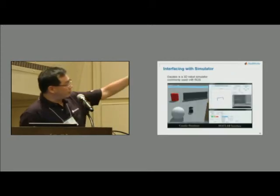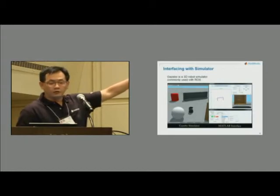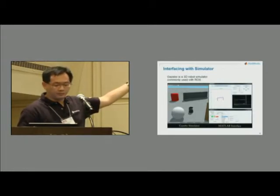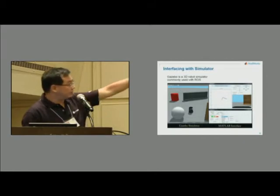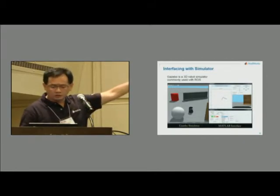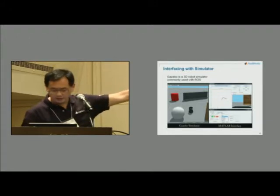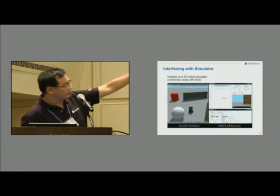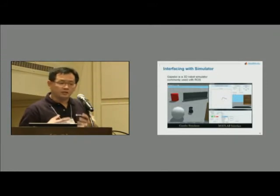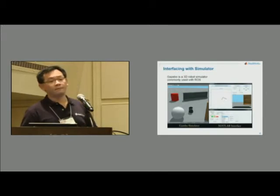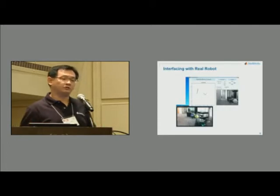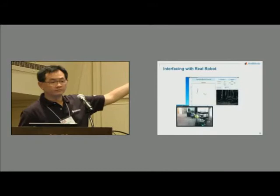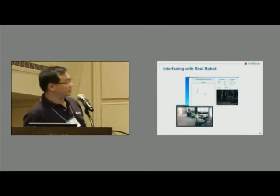We created a MATLAB graphical user interface to interact with Gazebo — here a TurtleBot is running in Gazebo. We have a couple of subscribers: one subscribed to the camera image, displaying the feed, and the other to the laser scan. In the upper right-hand corner of the GUI, there are navigation buttons responsible for publishing velocity commands to move the robot. And this is the exact same application — all we did was toggle the IP address to connect to an actual robot instead of Gazebo. You can see how the robot moves and the image changes.